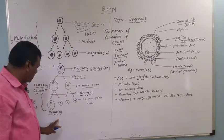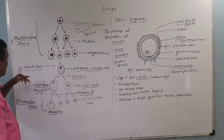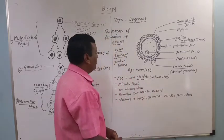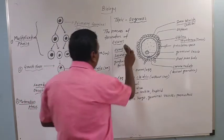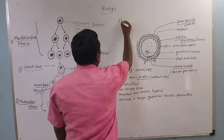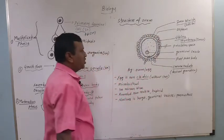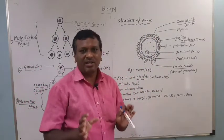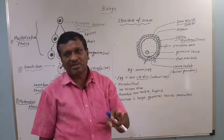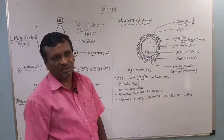This is the process of oogenesis. It has three steps: multiplication phase, growth phase, and maturation phase. The oogenesis process is responsible for the formation of female gametes, the ovum or egg, produced from the ovary.